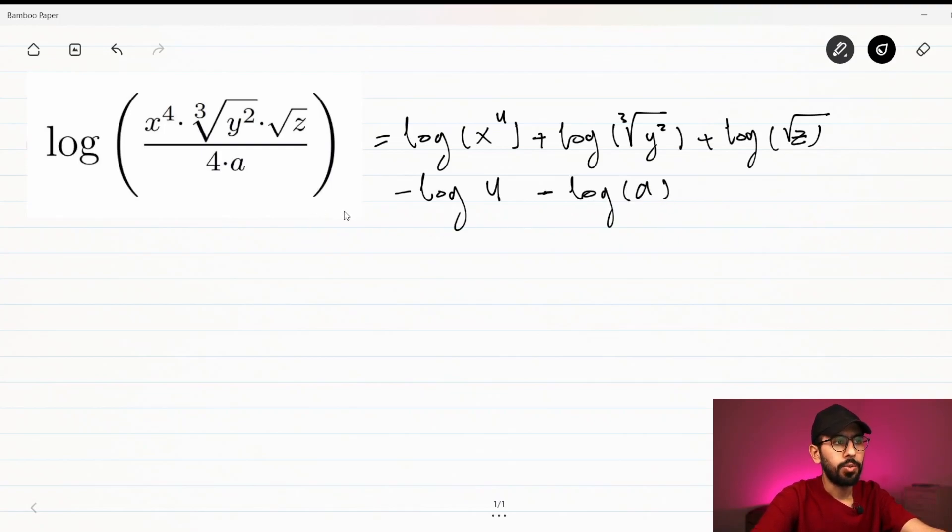Now you might be wondering why we didn't put positive between 4 and a. It is originally positive between these two because they are multiplied to each other, but they are in the denominator, and when they are in the denominator we need to change it to negative.